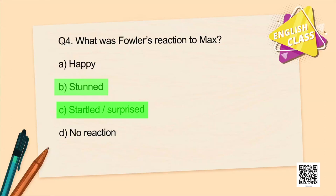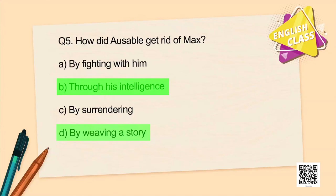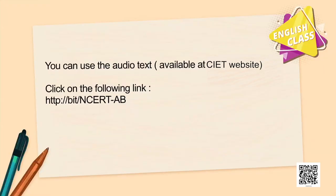Question 5: How did Ossible get rid of Max — by fighting, through his intelligence, by surrendering, or by weaving a story? Both options B and D are correct — he used his intelligence by weaving a story. It would be better if we read the lesson ourselves; however, listening to the story also contributes to our understanding and development of listening skills. You can use the audio text available at the CIET website, Google the NCERT textbook, or click the link displayed on the screen.